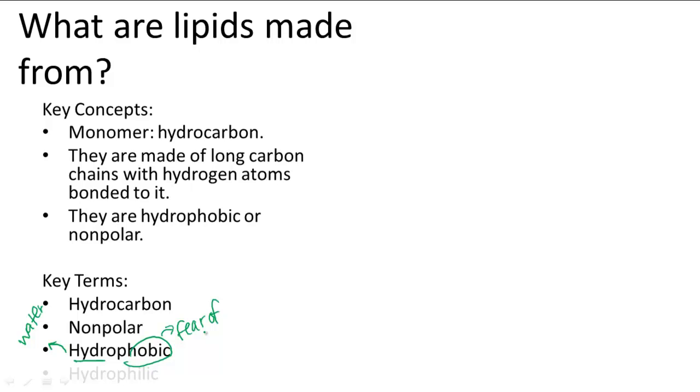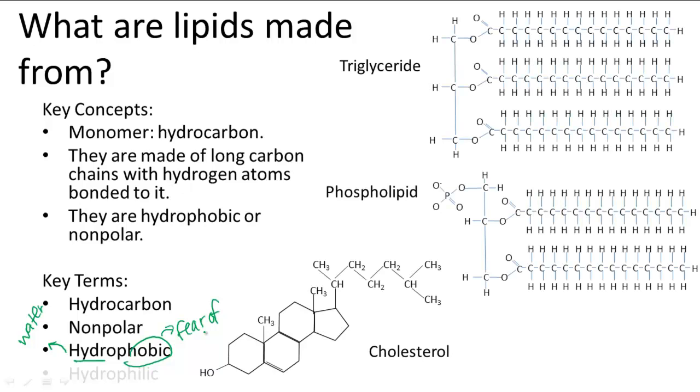The three most common forms of lipids in the body are triglycerides, phospholipids, and cholesterols. Triglycerides are made of three lipid polymers called fatty acids that are all attached to one glycerol molecule that is shown right here. That's why they're called tri-3-glycerides.